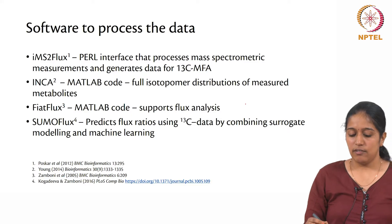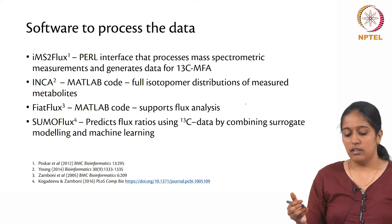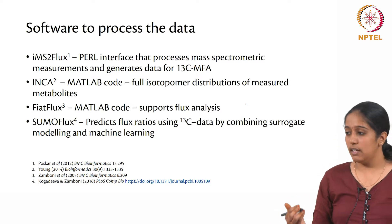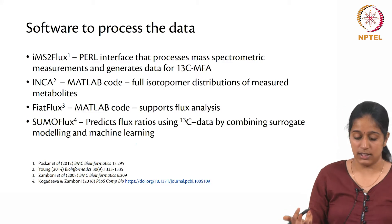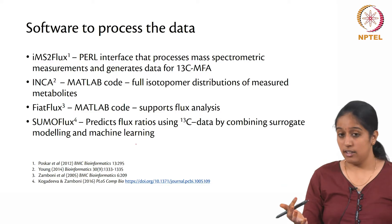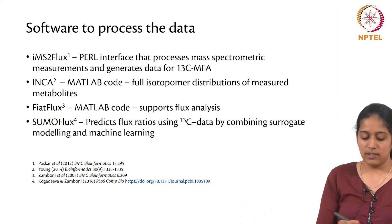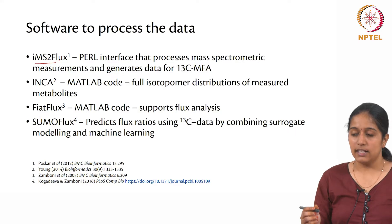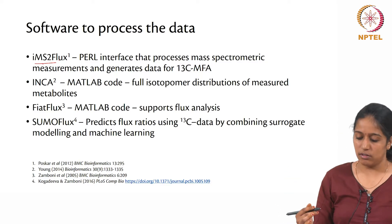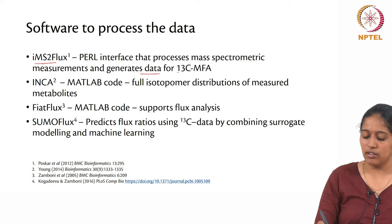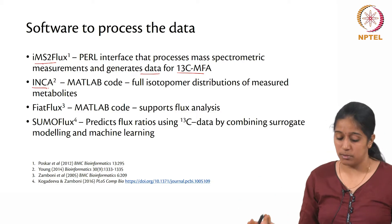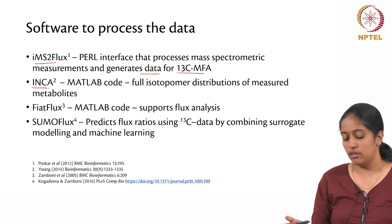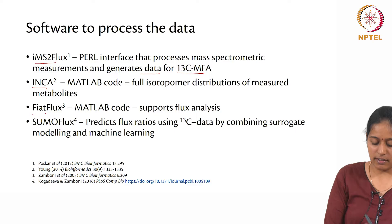All this global fitting and local flux ratio analysis is already done using different software. These software tools can process data directly coming from GCMS and give you data for performing 13C flux analysis. The first one is IMS to flux, which is a Pearl interface that processes your areas from mass spectrometry measurements and generates data for 13C MFA. Another is INCA, a MATLAB code that provides full isotopomer distributions of measured metabolites and is also used for 13C MFA. There are also Fiat flux and Sumo flux.